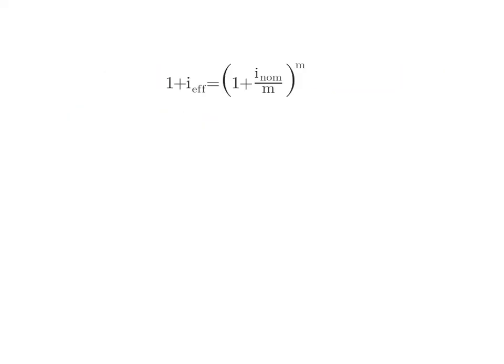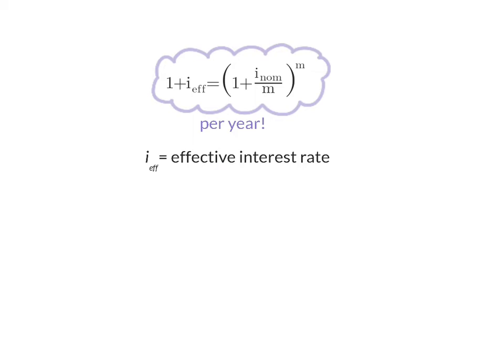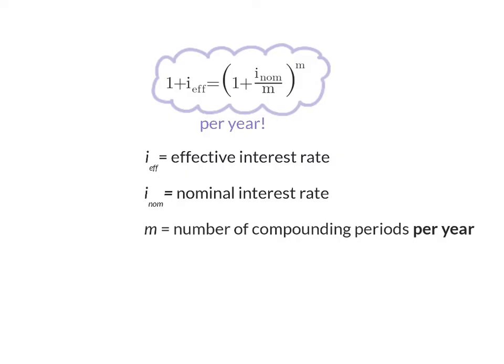In our example, we worked with an actual value of R100 to determine the difference between the nominal and effective interest rate. However, a formula can determine the difference between the nominal and effective interest rates without an amount. The important thing to remember is that this helps you determine the interest rate that an amount will receive per year. In this formula, IF is the effective rate, INOM is the nominal rate, and M is the number of compounding periods per year.